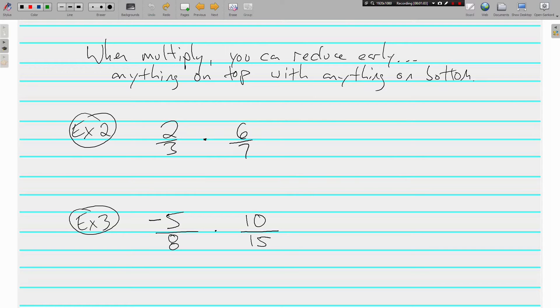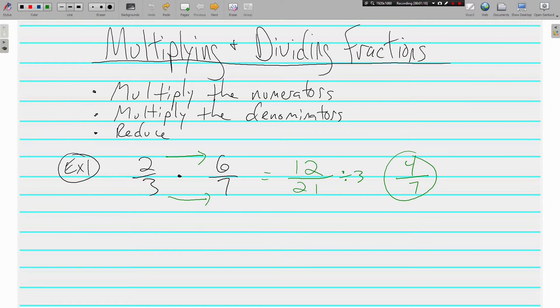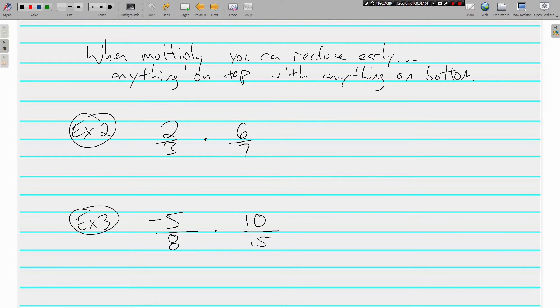Here in example 2, we have 2 3rds times 6 7ths. If you notice, it's the same problem as example 1, 2 3rds times 6 7ths. But here's what I mean by reducing early. 3 and 6 both have a common factor. 3 goes into 3 1 time and 3 goes into 6 2 times.